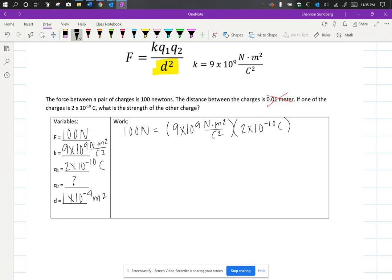And then my second charge, since I don't know what it is, I'm just going to put Q2. I'm going to divide by my distance squared, which is 1 times 10 to the negative 4th meters squared. So please remember to use parentheses, use the exponent function inside your calculator. It'll make it a lot easier to solve this problem.